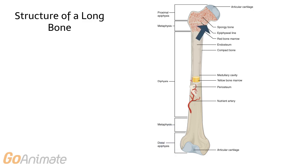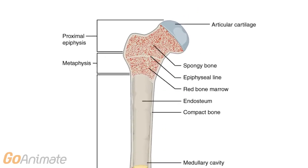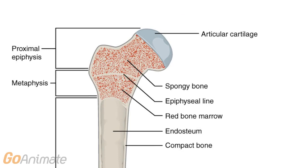The epiphysis and metaphysis are separated by the epiphyseal plate. The matrix of bone contains collagen, hydroxyapatite, glycosaminoglycans, proteoglycans, and glycoproteins, along with calcium carbonate.